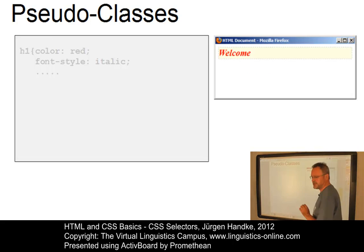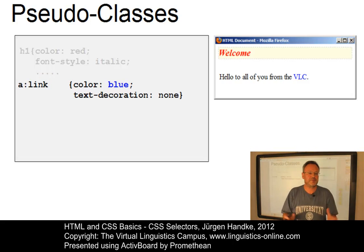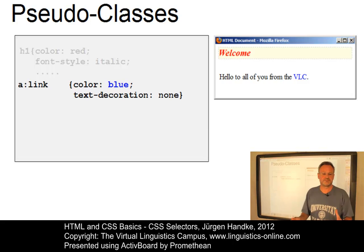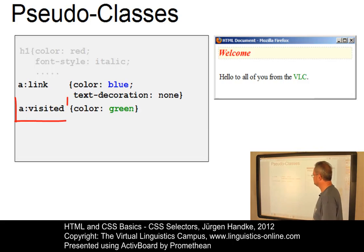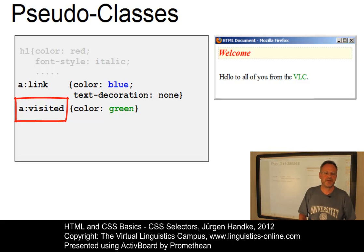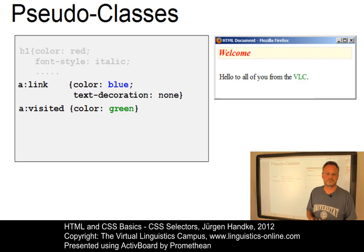With the pseudo-class 'a:link', we can define the default state of the link itself. In this case, we overwrite the underline definition from the browser style and define no further text decoration. The visited state, 'a:visited' — the state after a hyperlink has been visited — is listed next. We chose green here to illustrate this state.